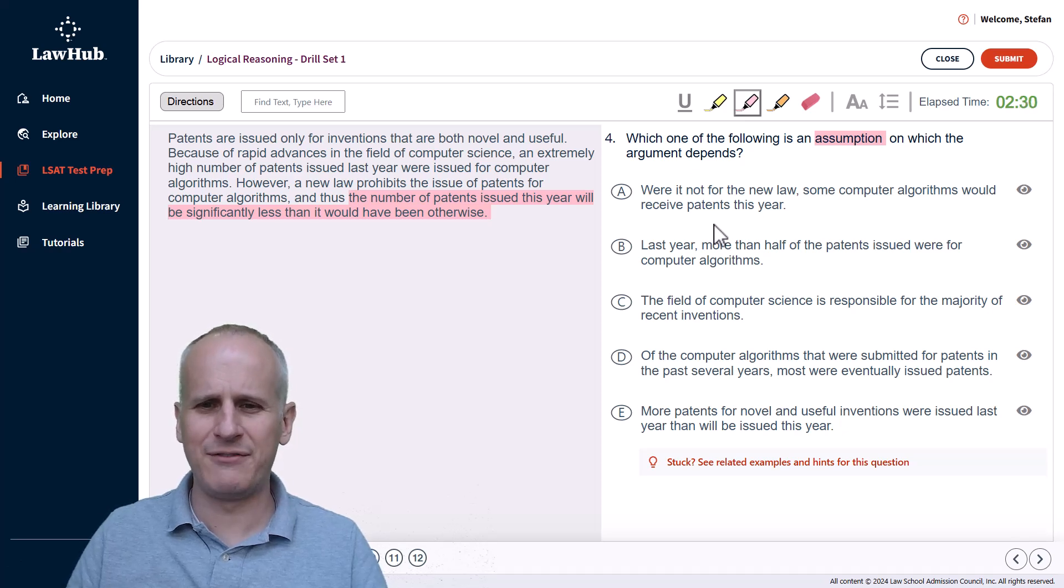Now choice B: last year more than half of the patents issued were for computer algorithms. Again, we're talking about patents, computer algorithms, last year. Maybe this one seems relevant as well, so we'll hold on to B. Then we get to choice C.